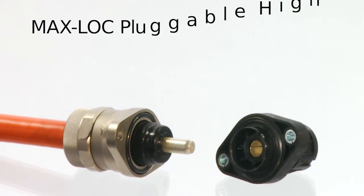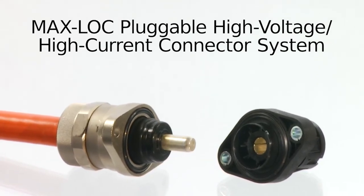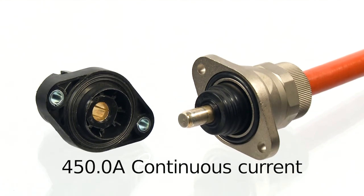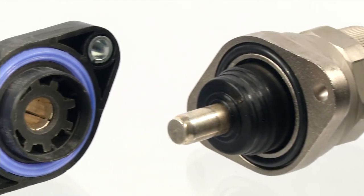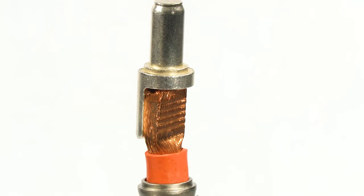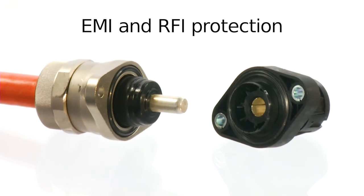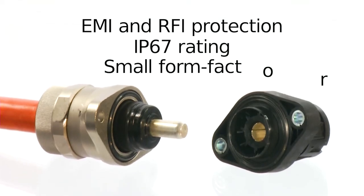The Molex MaxLock pluggable high-voltage high-current connector system delivers 450 amps of continuous current and allows peaks to 650 amps. This pluggable version shares many features of the MaxLock Plus including EMI and RFI protection, an IP67 rating, and a small form factor.